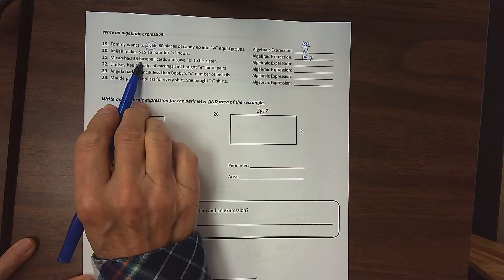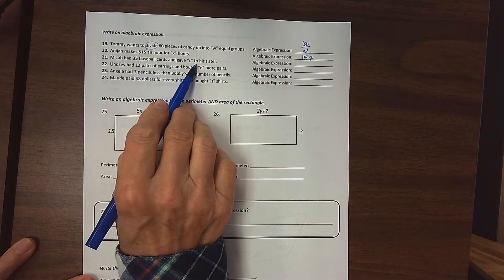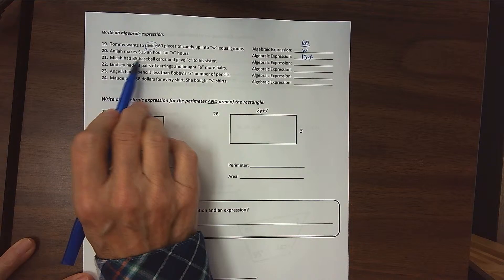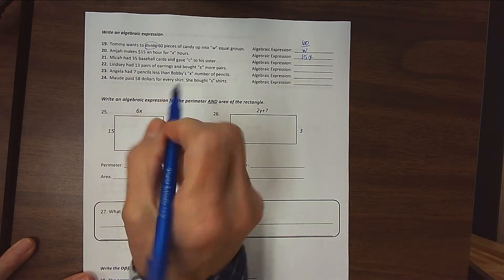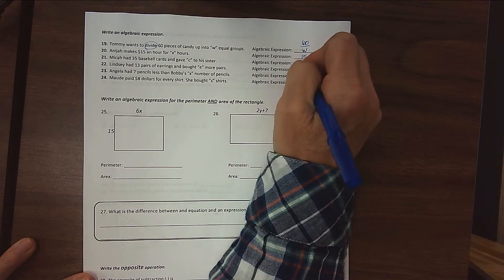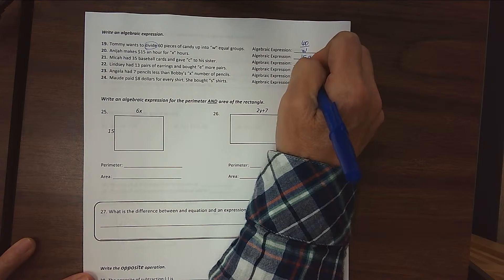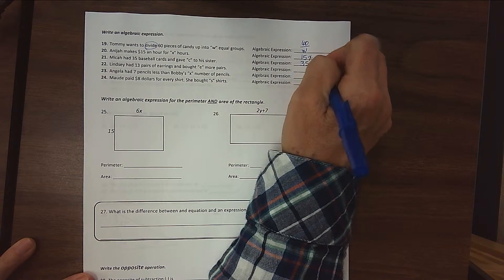Micah has 35 baseball cards and gave C to his sister. So he starts with 35 but gives C away. That's going to be a subtraction problem. If we give something away, we're subtracting it, so 35 minus C.